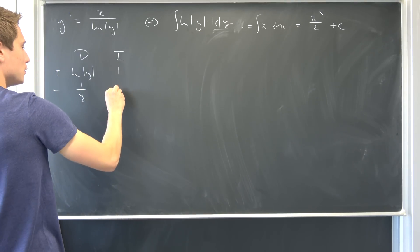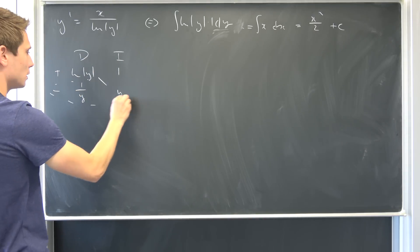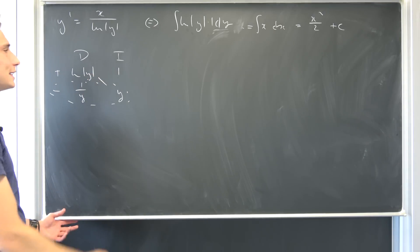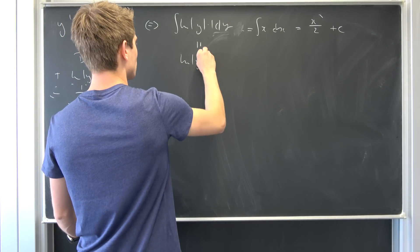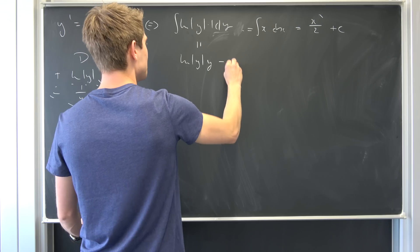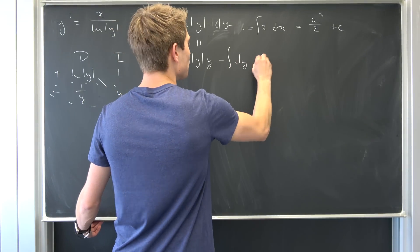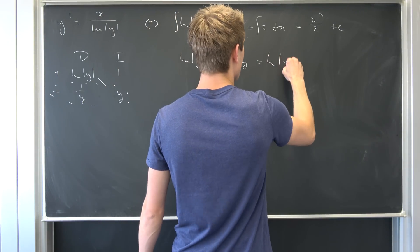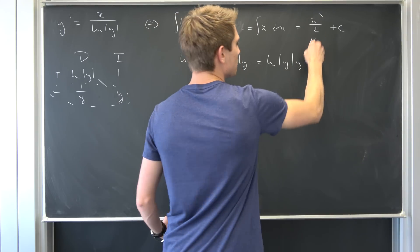Integrating 1 is going to leave us with y. And now we can multiply those together and take the integral of this thing and we end up with the natural log of y times y minus the integral of y over y. That's just 1. So dy and this thing right here is just natural log of y times y minus y being equal to this thing.